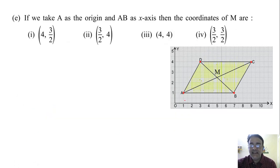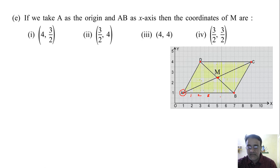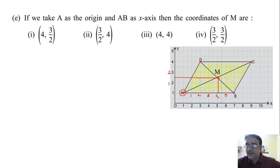Now the last question: if you take A as the origin and AB as the x-axis, then what is the coordinate of M? A becomes the origin, so the positions shift accordingly. The new coordinate for M is (4, 1.5) — that is, (4, 3/2). So the correct answer is the first option.